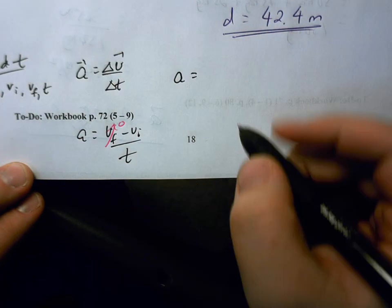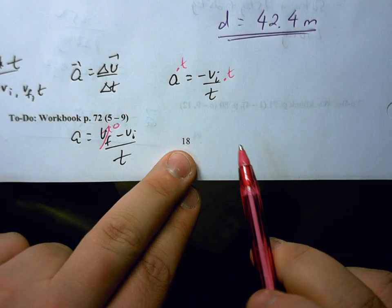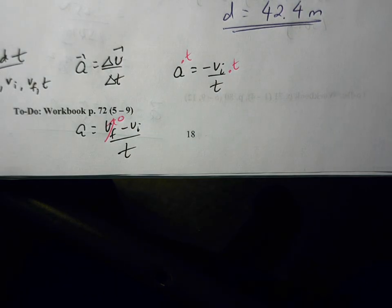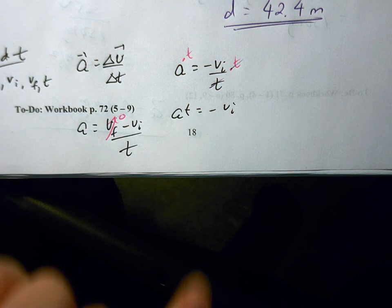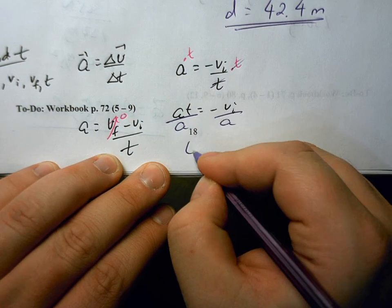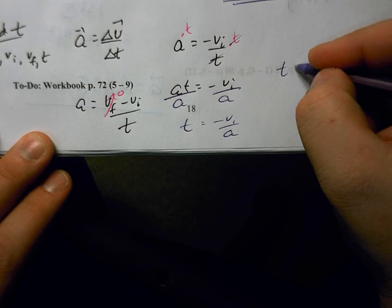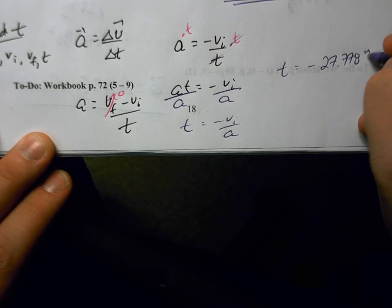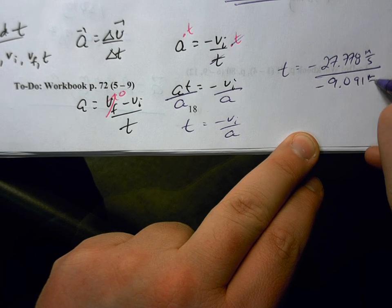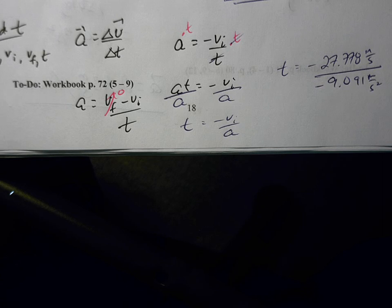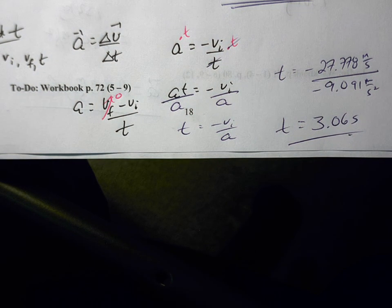From a = −vi / t, we multiply both sides by t to get: at = −vi, then divide both sides by a: t = −vi / a. Plugging in: the initial velocity is 27.778 m/s and the acceleration is negative 9.091 m/s². That gives us a stopping time of approximately 3.06 seconds.